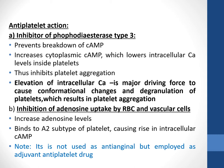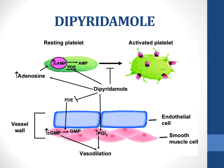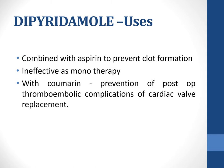Because of its antiplatelet action, dipyridamole is not majorly used as an anti-anginal drug but is employed as an adjuvant antiplatelet drug. It is combined with aspirin to prevent clot formation and is ineffective as monotherapy. Along with coumarin, it prevents post-operative thromboembolic complications of cardiac valve replacement.